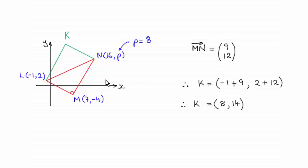So that means that to get to the point k, I start at l and I've got to go 9 units across to the right, followed by 12 units up. So minus 1 then plus 9 units to the right gives me the 8, and then the 2 plus 12 more units up gives me the 14.